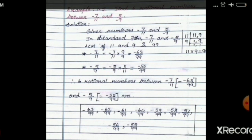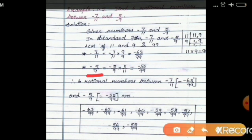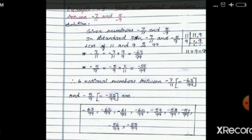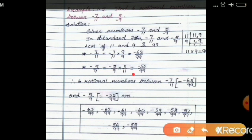Next number: minus 5 by 9. The denominator is 9; 9 times 11 equals 99, so we multiply the whole fraction by 11. Minus into plus gives minus; 5 elevens are 55, and 9 into 11 is 99. We get minus 55 by 99.